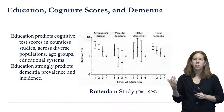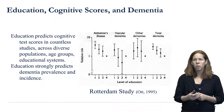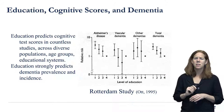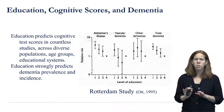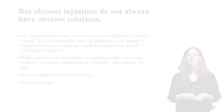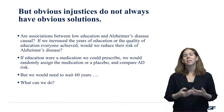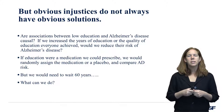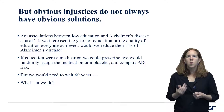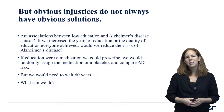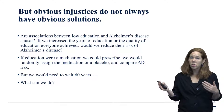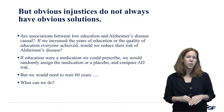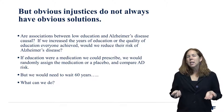We know this association is there — I could have shown results from 15 other studies showing essentially the same pattern. But just because there's an obvious injustice like excess dementia risk in people with low education doesn't mean there's an obvious solution. We need to know more: are the associations between low education and Alzheimer's disease actually causal? That is to say, if we increased years or quality of education, could we expect to actually reduce the burden of Alzheimer's disease? If education were a medication, we could prescribe it randomly — run a randomized controlled trial.